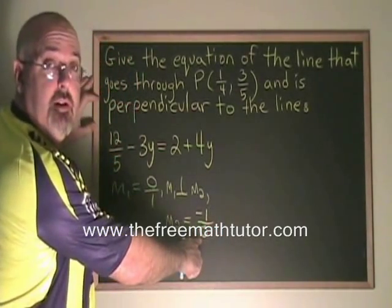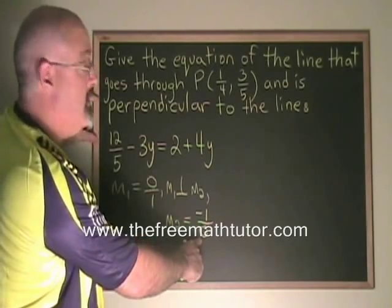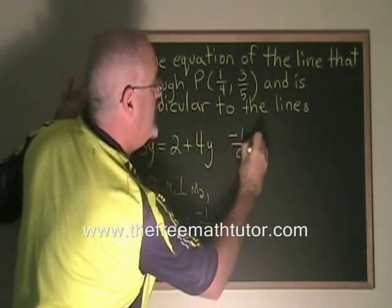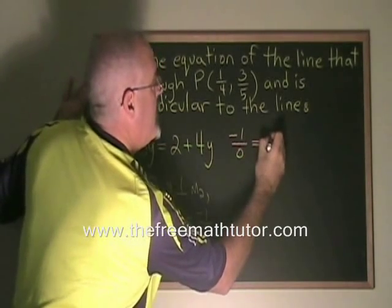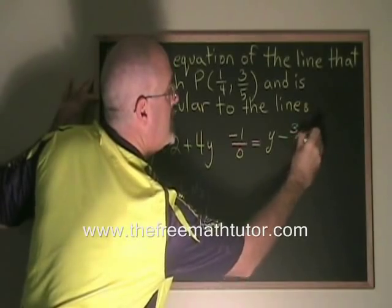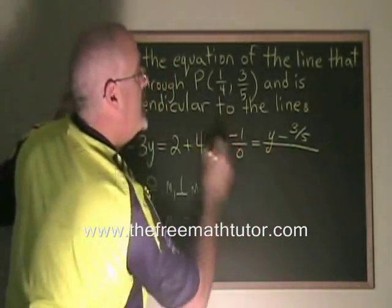Now this fraction, of course, is undefined, but we can still use it to derive our equation. Negative 1 over 0 is equal to y minus 3 fifths over x minus 1 quarter.